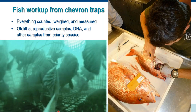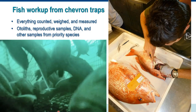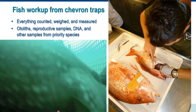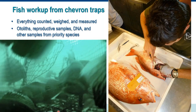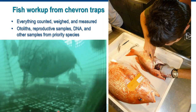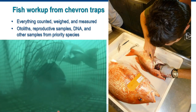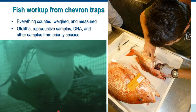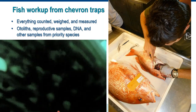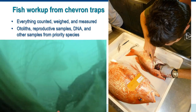Everything caught in traps is counted, weighed at the species level, and measured. For priority fish species, we take otoliths for aging, reproductive samples to understand reproductive biology, DNA, and a variety of other samples over time. This detailed biological information is only obtainable from the physical chevron trap catches.